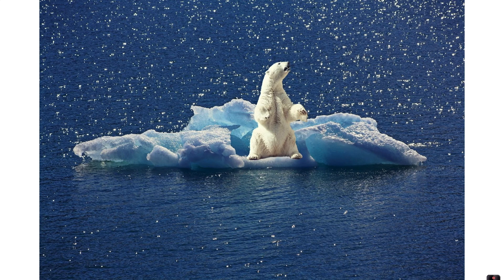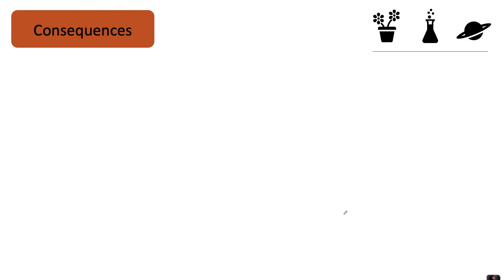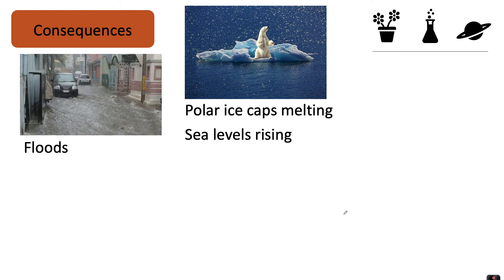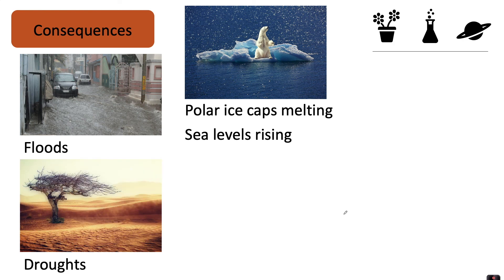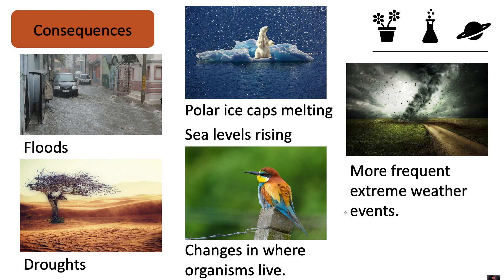I'm sure you've all seen an image like this because this is synonymous with what's happening in terms of climate change and global warming. The consequences of human activity increasing greenhouse gases include polar ice caps melting, sea levels rising, floods, droughts, changes in where organisms live, and more frequent extreme weather events.